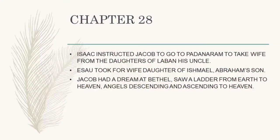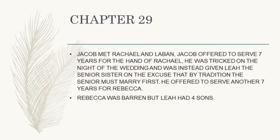Chapter 28: Isaac instructed Jacob to go and take a wife from the daughters of Laban, his uncle. Jacob also saw a daughter of Ishmael, Abraham's son, taken as a wife. Jacob had a dream at Bethel — he saw a ladder going from earth to heaven with angels ascending and descending.